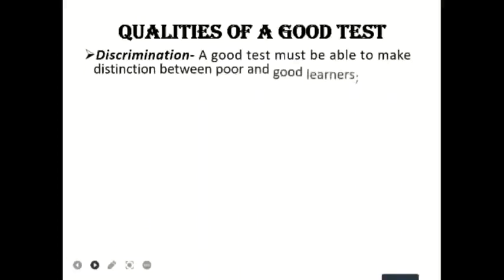Let's look at other qualities a good test must possess. A good test must have the quality of discrimination. That means the test must be able to make a clear distinction between those who know and those who do not know. For example, if one student is very good in mathematics and another is not, a good mathematics test should clearly discriminate between the two, giving the better student higher marks.